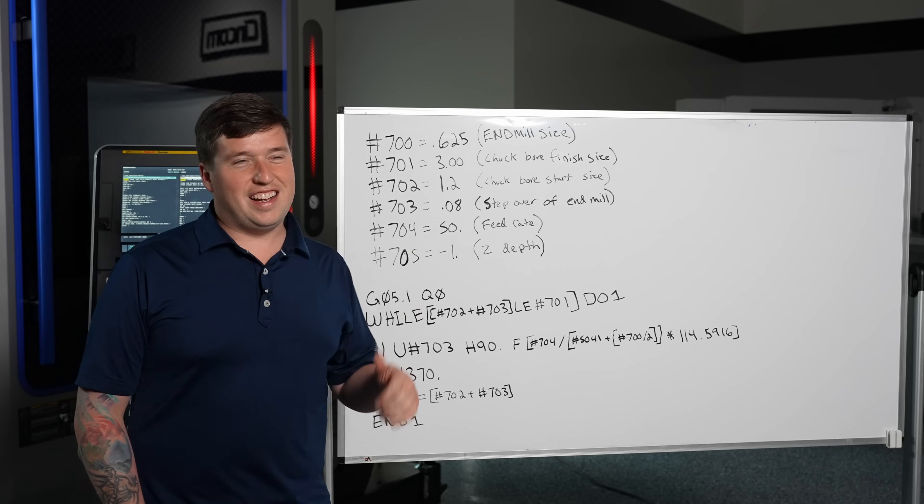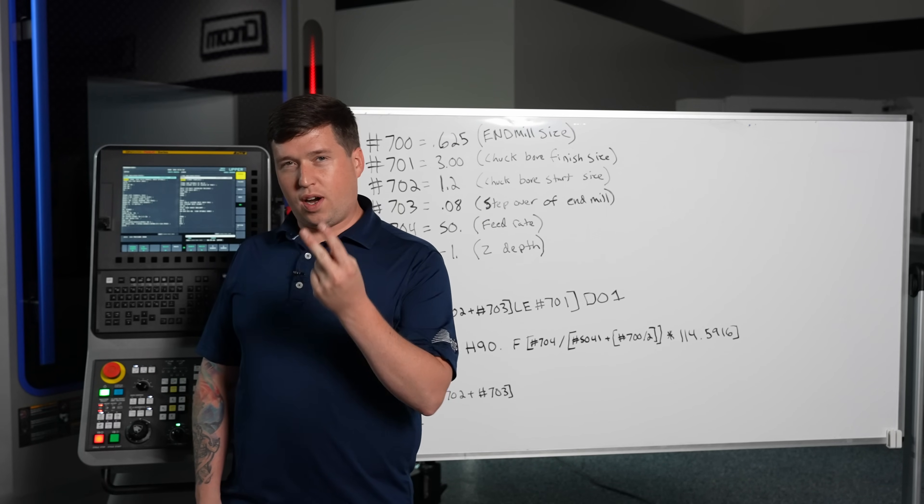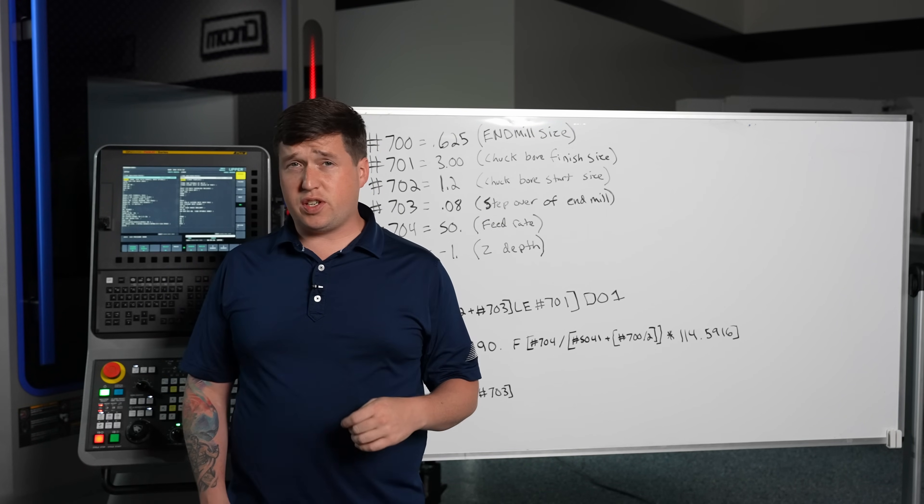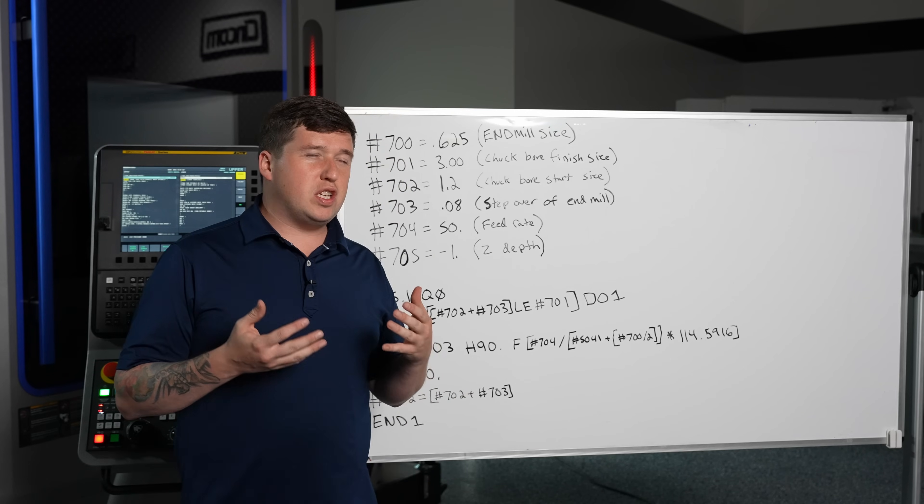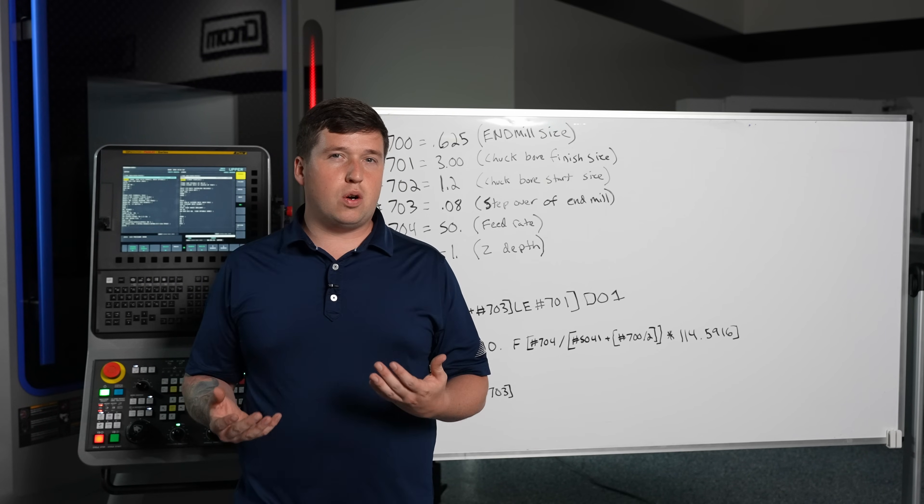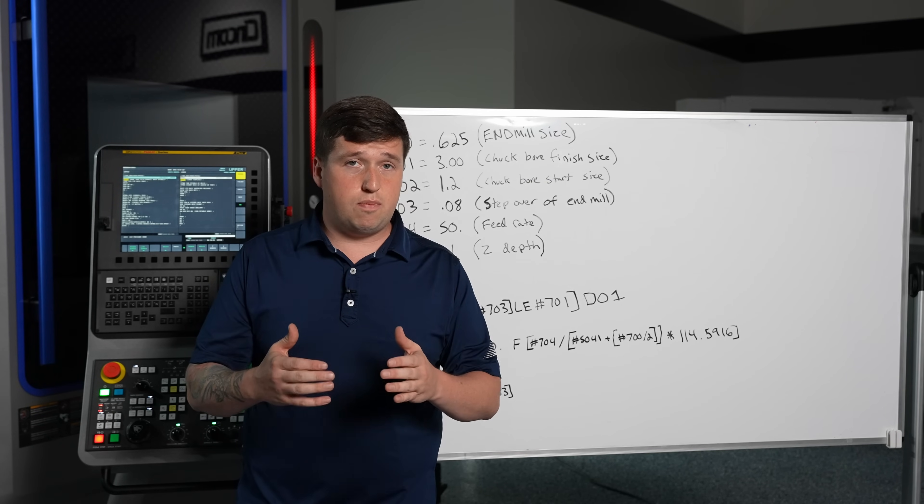So if you took the two programs from the description down below you'll notice that there's a program 691 which is for your main jaws and there's a program 692 which is for your sub jaws. Now both of these pretty much work the same so let's go over the variables that you need to change to make this work.